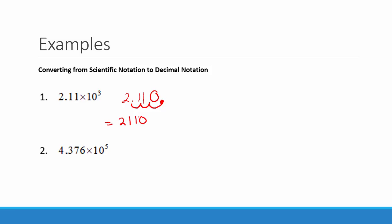In our next example we have 4.376 times 10 to the positive 5. Once again we have a positive exponent on 10, so that will make this number bigger. To make this number bigger we move the decimal point to the right. The power is 5, so that tells us how many places to move it. We need to add two zeros to hold those places, so we get 437,600.